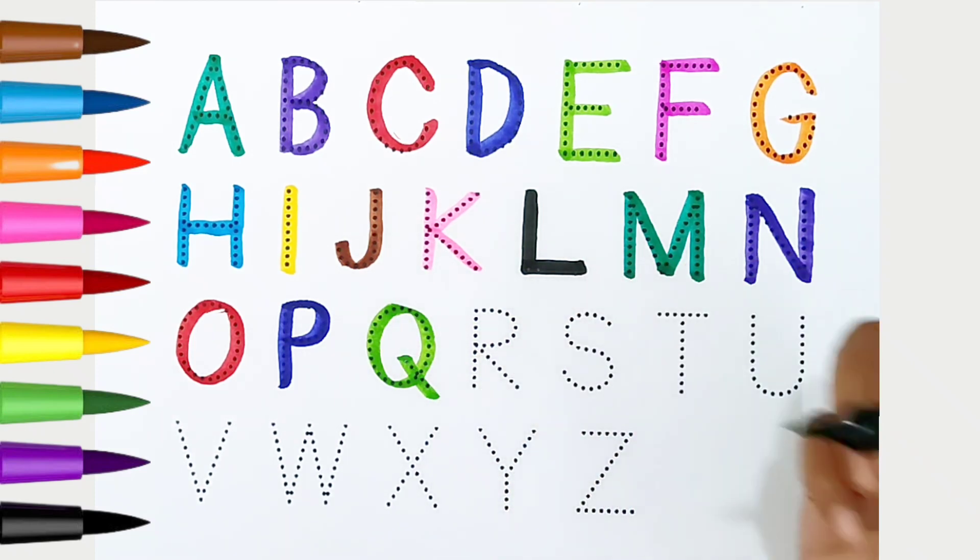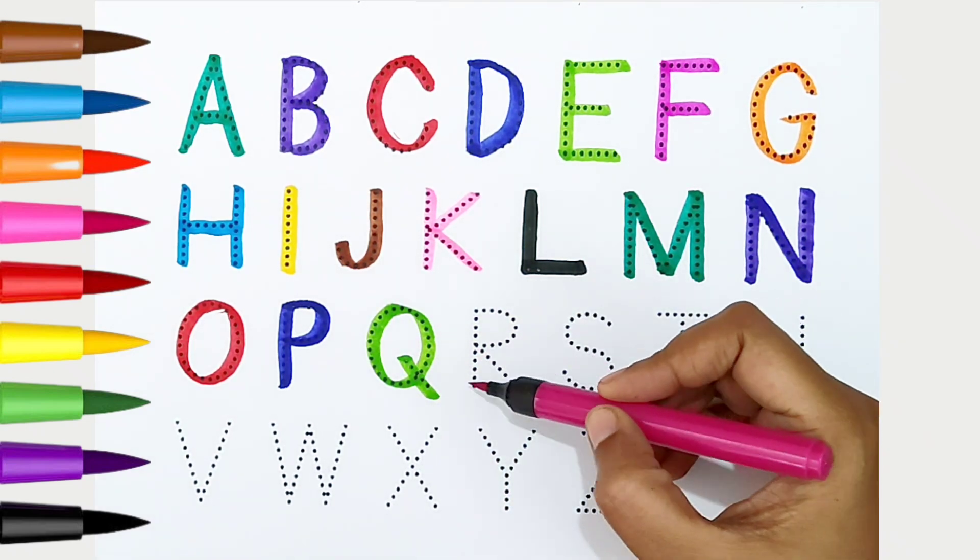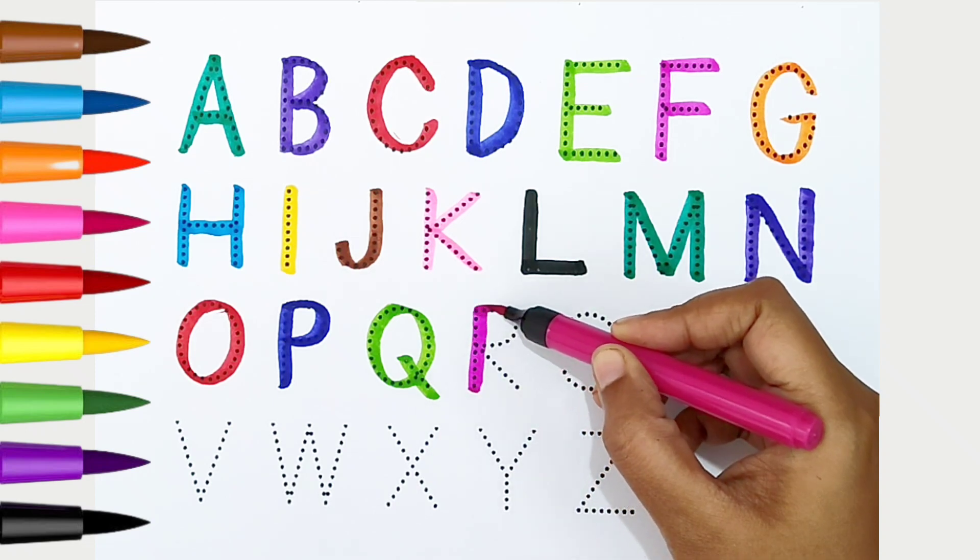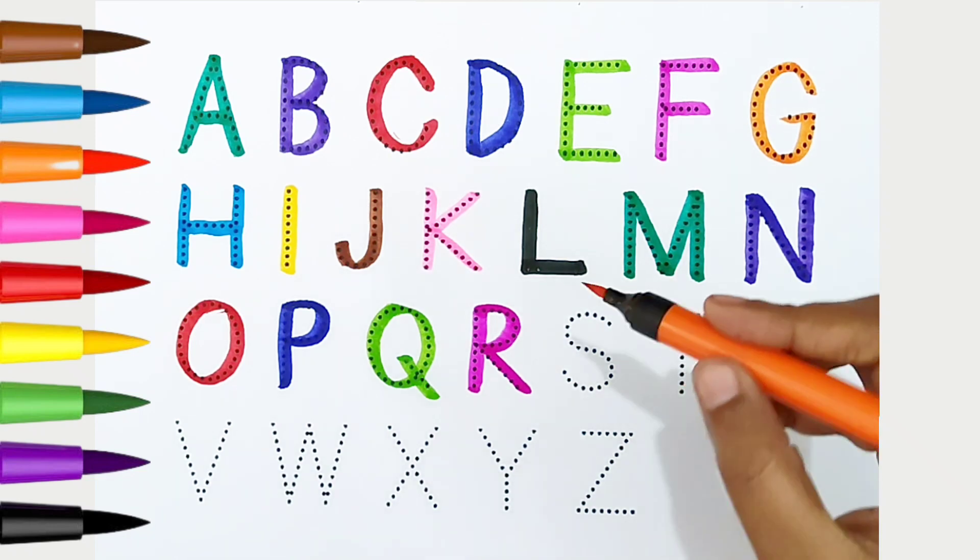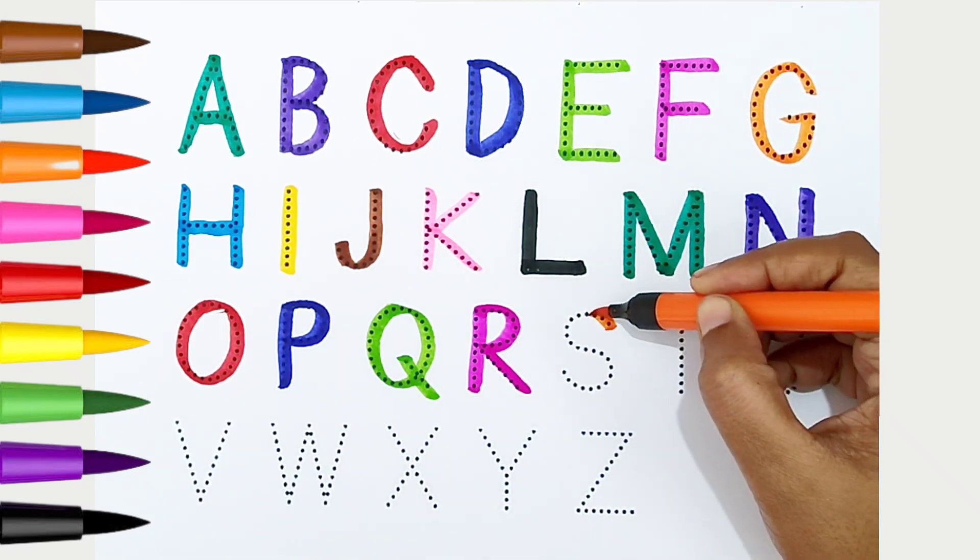Q is for queen. R, dark green color. R is for rose. S, orange color.